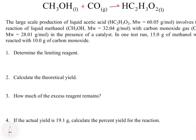Let's look at how to actually solve problems involving limiting reagents. This problem says: the large-scale production of liquid acetic acid involves the reaction of liquid methanol with carbon monoxide gas in the presence of a catalyst. In one test run, 15 grams of methanol was reacted with 10 grams of carbon monoxide. First, determine the limiting reagent.